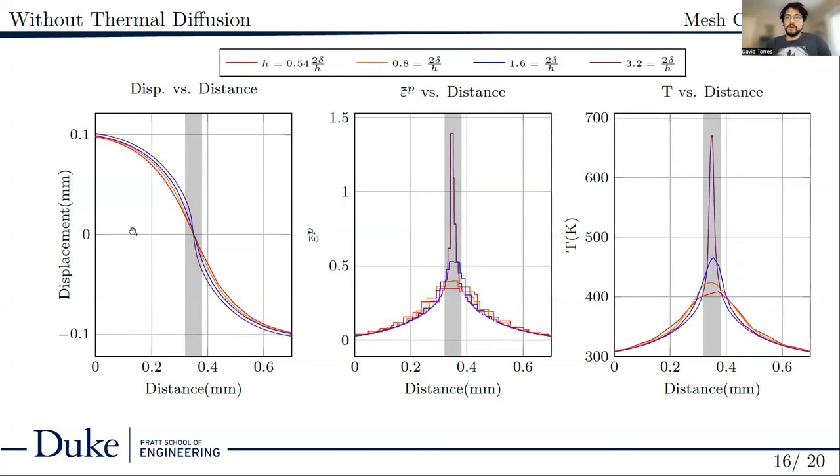Now we see the results without thermal conductivity. It is immediately obvious that the spatial convergence of the shear band is no longer reached. The different mesh resolutions are no longer in agreement to the width of the shear band, and this is most obvious in the displacement chart where the severity of the displacement is correlated with the mesh refinement.